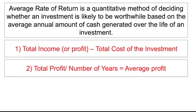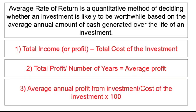So what we'd have to then do is the third step: take your average annual profit from step two, divide it by the actual cost of the investment, then times it by 100 because we want to show it as a percentage.